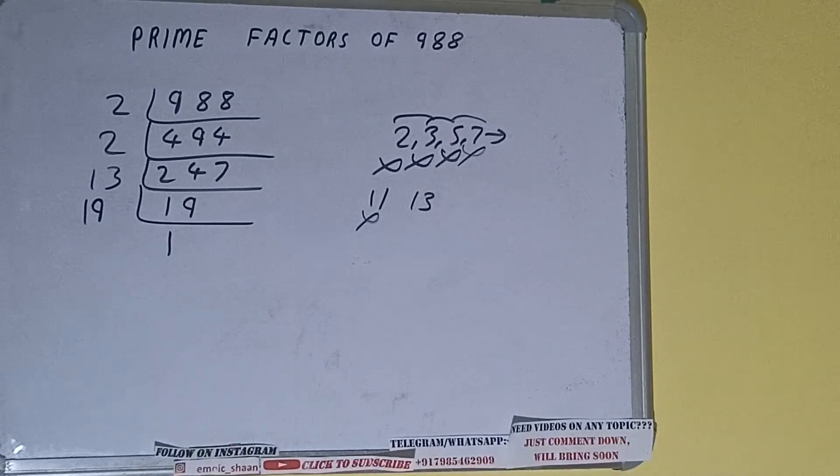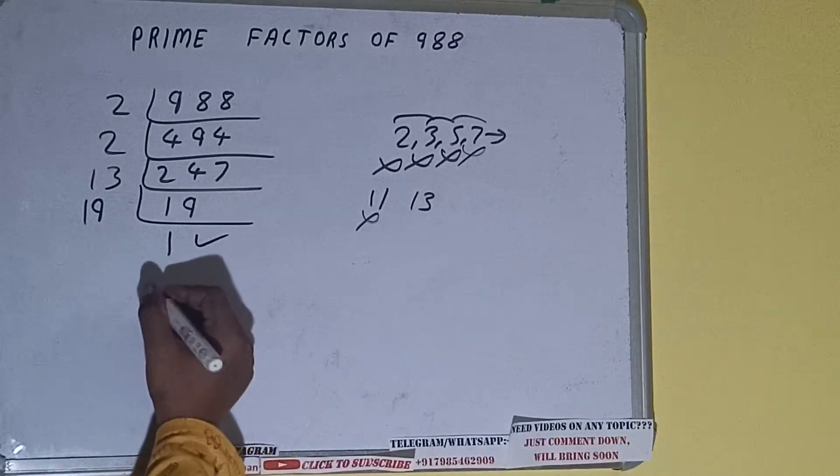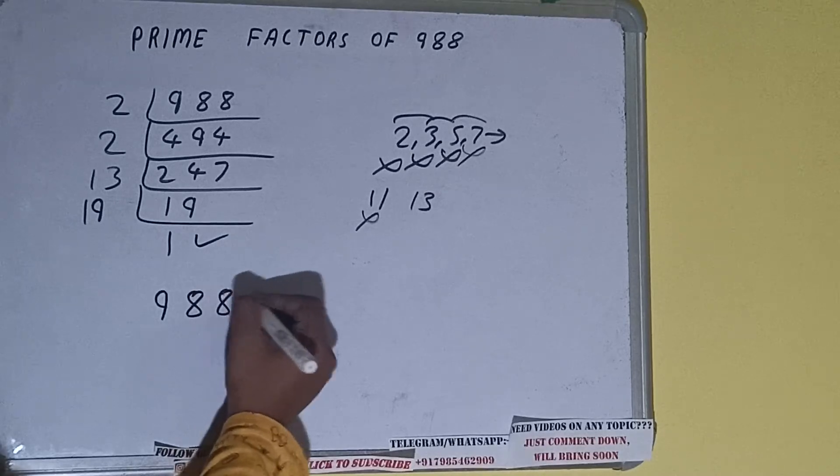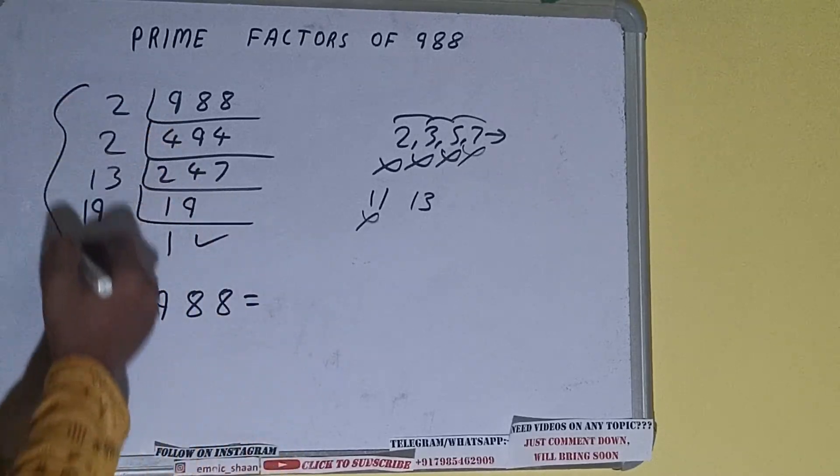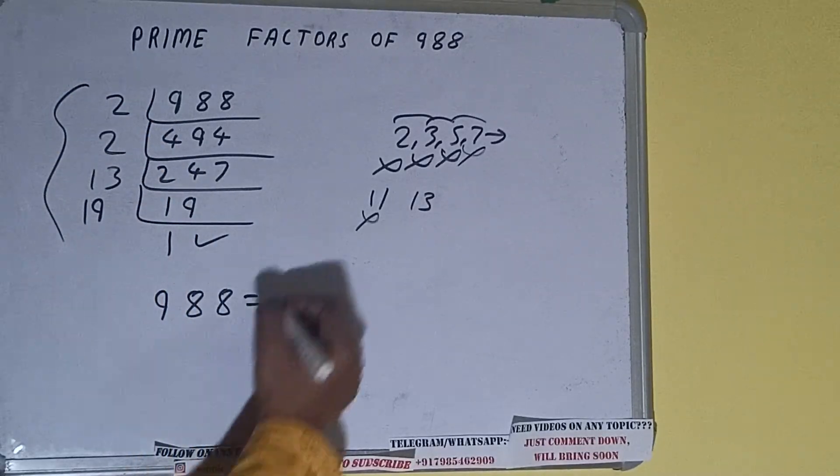Once we do so we'll be getting 1. Once we get 1 we need to stop and do one last thing, that is: prime factors of 988 equals multiply whatever we have on the left-hand side, that is 2 × 2 × 13 × 19. That will be the answer.